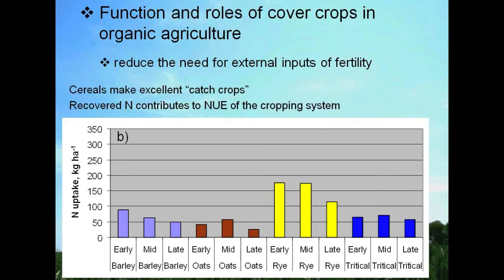On the x-axis here we have a number of different cover crops divided up by their planting date — early, mid, and late — and on the y-axis we see the amount of nitrogen taken up. Planting date affects how effective a cover crop is at soaking up extra nitrogen left in the soil after a cash crop. That nitrogen taken up contributes to the nutrient use efficiency of the system, and there are differences between the choices available in cover crops.